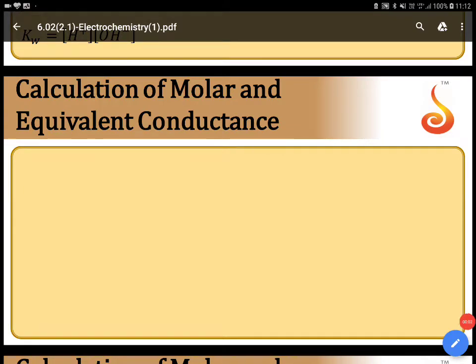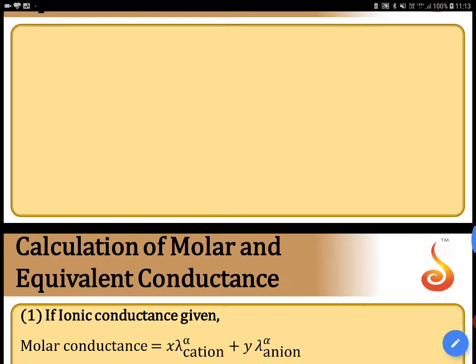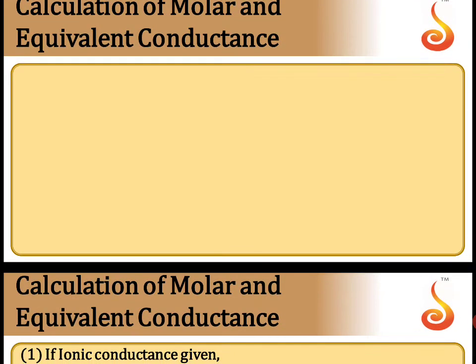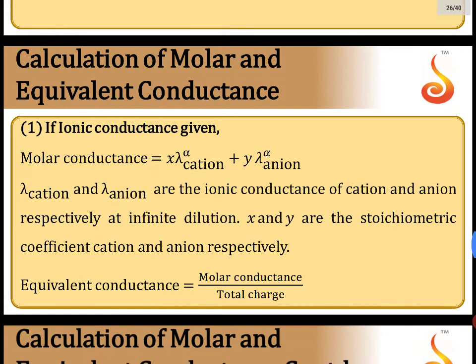Now, calculation of molar conductance and equivalent conductance. The relationship between molar conductance and equivalent conductance — you will be asked to calculate these for various molecules. The formula to understand: molar conductance is equal to x into lambda naught alpha plus, and y into lambda alpha minus. Lambda cation and lambda anion are the ionic conductances of cation and anion, and x and y are the stoichiometric coefficients.